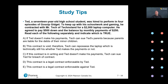Option A: if Ted doesn't make his payments, action can be taken against Ted's parents because parents are liable. Is this true? No — parents are not liable unless they have signed as guarantors, and nothing here says they are guarantors. So A is not right. Option B: this contract is void. Is it void? No — it's a legal contract. Option C: if this contract is in writing and Ted doesn't make payments, Tech can sue Ted. Verbal agreements are as valid as written ones per chapter six, so C doesn't make sense.